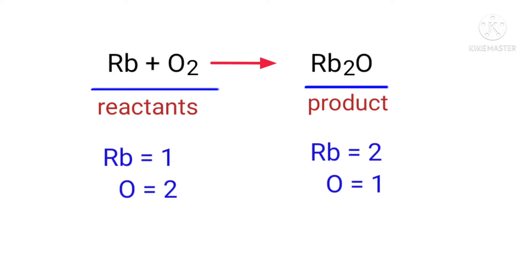In the reactants side there are one Rubidium atom and two Oxygen atoms present, and on the product side there are two Rubidium atoms and one Oxygen atom present. The number of atoms are not balanced on both sides.